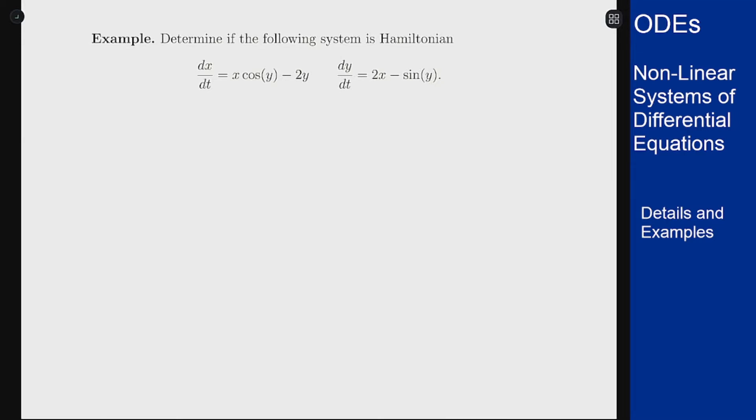So to do that we want to recall that the definition was that a system is Hamiltonian if dx/dt is minus partial h partial y, and dy/dt is partial h partial x, for some function h of x,y.